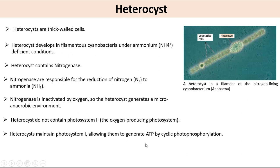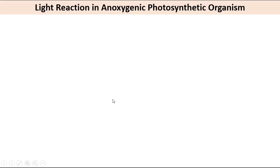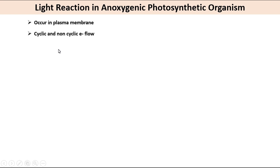We have discussed the light reaction in oxygenic photosynthetic organisms. Now we will discuss the light reaction in anoxygenic photosynthetic organisms. In anoxygenic organisms, the light reaction occurs in the plasma membrane and can involve both cyclic and non-cyclic electron flow. NADH may or may not form, and ATP synthesis occurs.